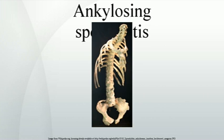Mortality: Mortality is increased in patients with AS and circulatory disease is the most frequent cause of death. Because increased mortality in ankylosing spondylitis is related to disease severity, factors negatively affecting patient outcome include male gender, plus three or more of the following in the first two years of disease: erythrocyte sedimentation rate greater than 30 mm per hour, unresponsive to NSAIDs, limitation of lumbar spine, sausage-like fingers or toes, oligoarthritis, and onset less than 16 years old.